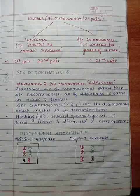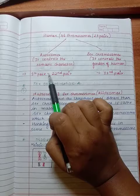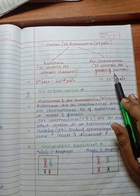Now we come to sex determination. In humans there are 46 chromosomes or 23 pairs. Autosomes control the somatic characters, first pair to the 22nd pair. Sex chromosomes control the gender of the human, that is the 23rd pair.